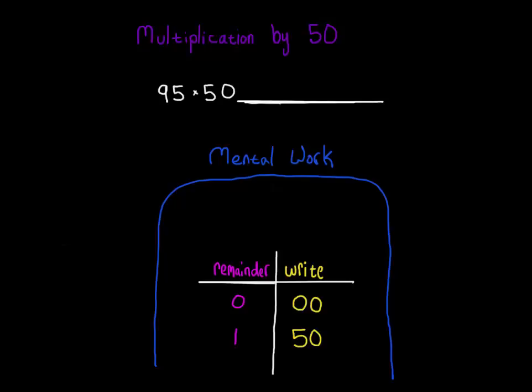The last of our easy multiplication tricks is probably the easiest of all. Multiplying by 50 is a lot like multiplying by 25, but instead of dividing by 4, we'll divide by 2.